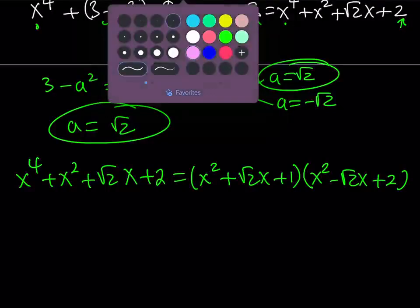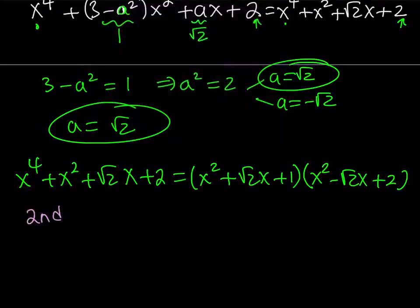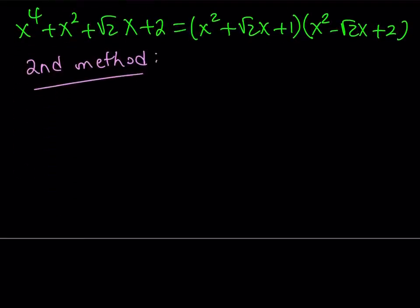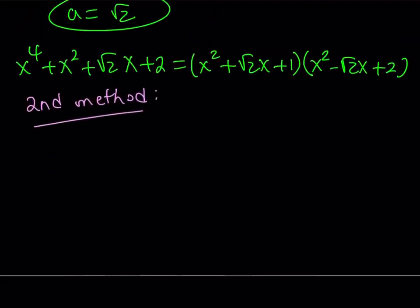So let's go ahead and talk about the second method. Now obviously the second method is more elegant in my opinion and also nicer. Let's go ahead and take a look. Now for this method, I'm going to use what's called Sophie Germain's identity. For those of you who are not familiar with that, it looks like this.